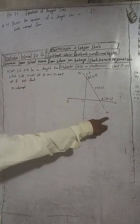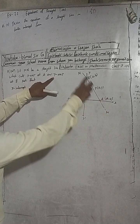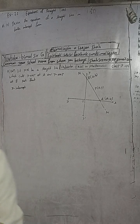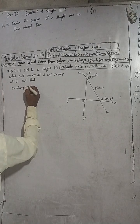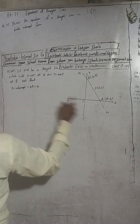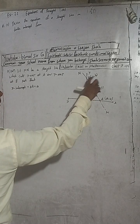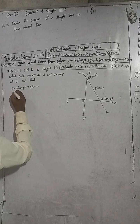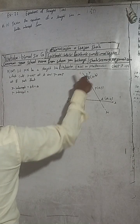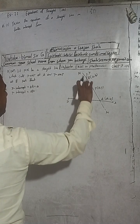Let MN be a straight line which cuts the x-axis at A and the y-axis at B, such that x-intercept OA equals the distance 'a', making the coordinate of A equal to (a, 0). And y-intercept OB equals the distance 'b', with coordinate (0, b).